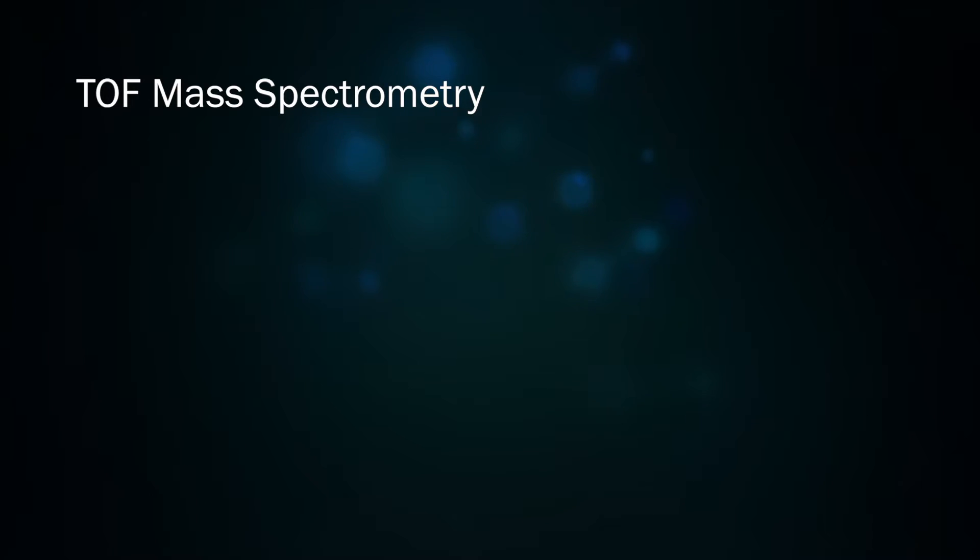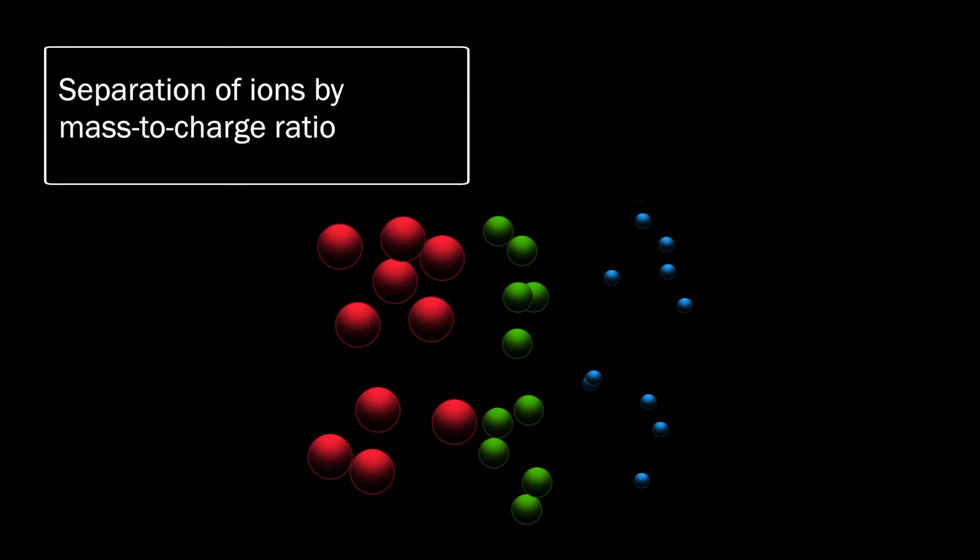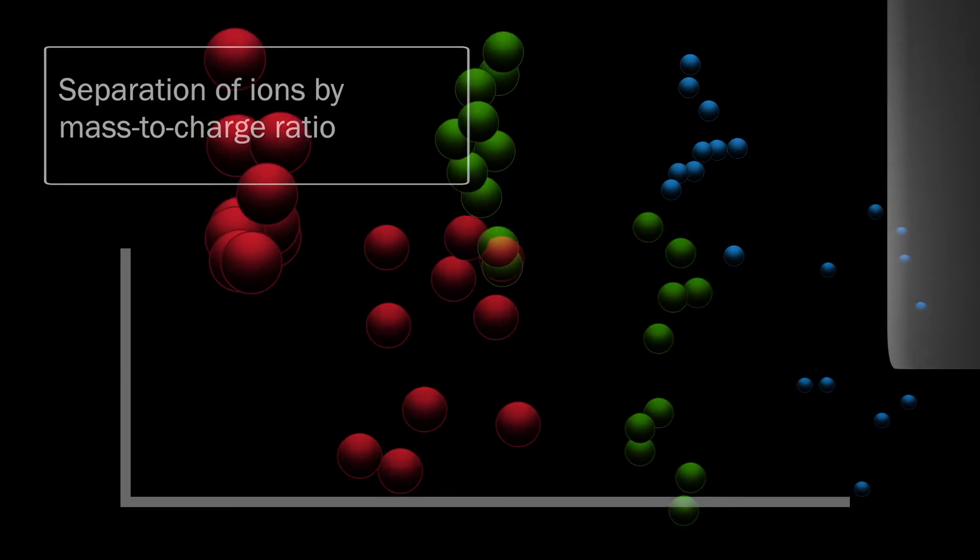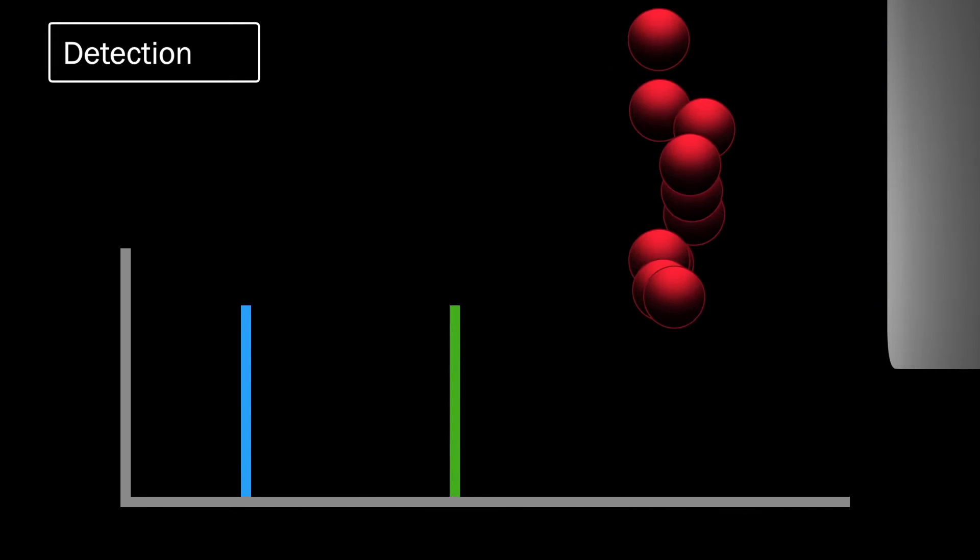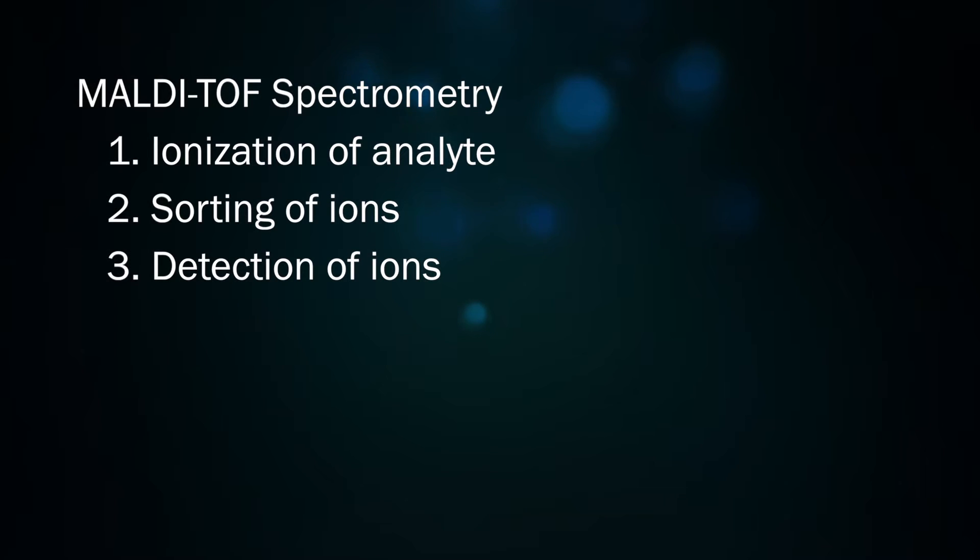TOF stands for Time of Flight, a mass spectrometry method that separates ions by their mass-to-charge ratio and quantitatively determines that mass-to-charge ratio by the time it takes for the ions to reach a detector. Let's look at each of these components of MALDI-TOF spectrometry in detail.